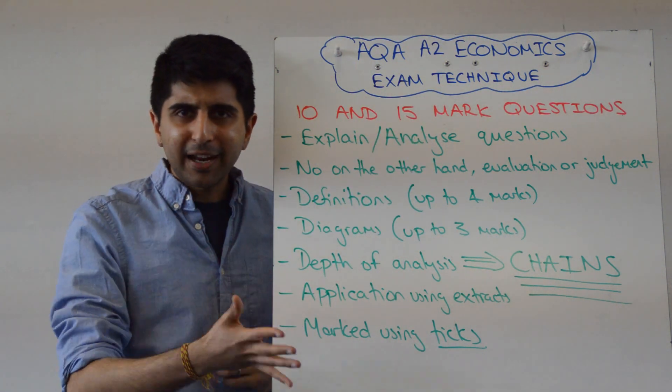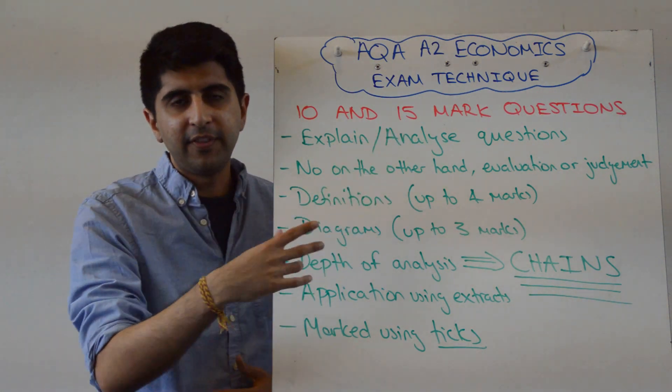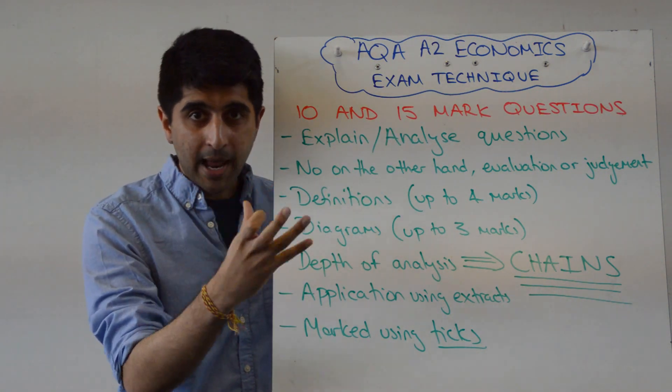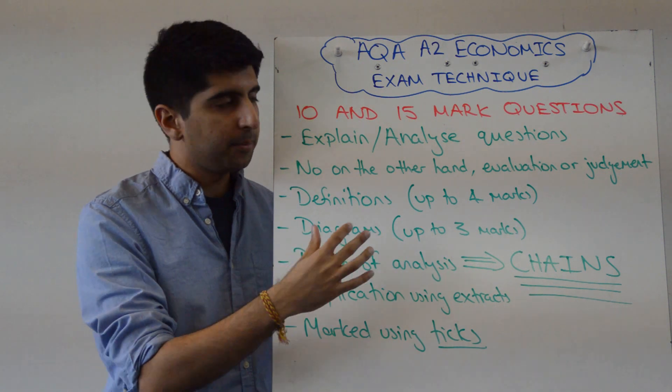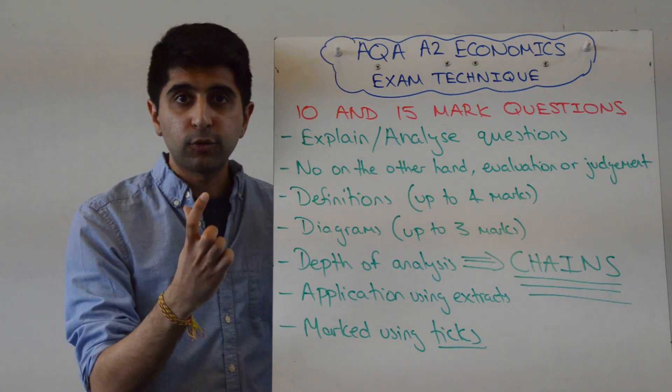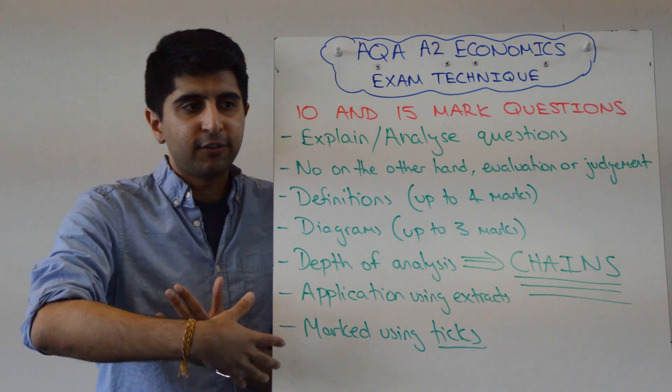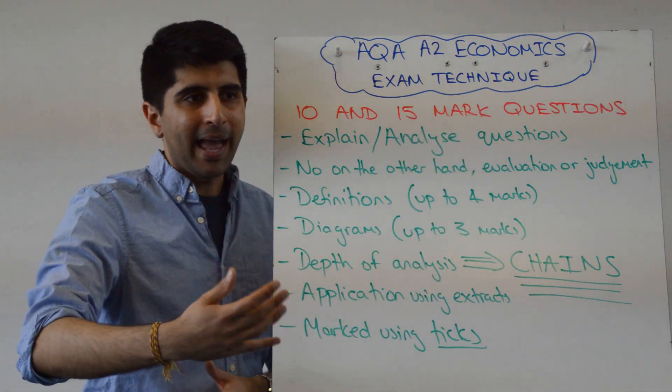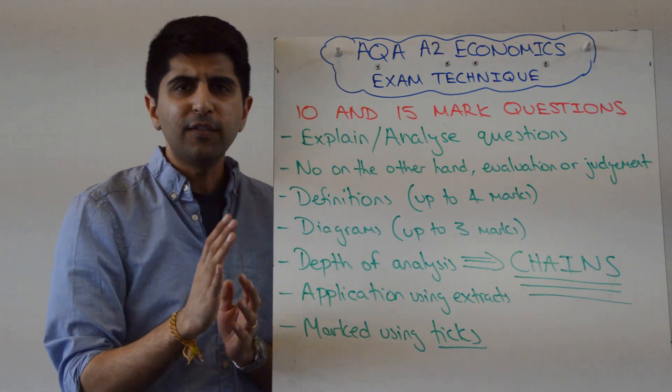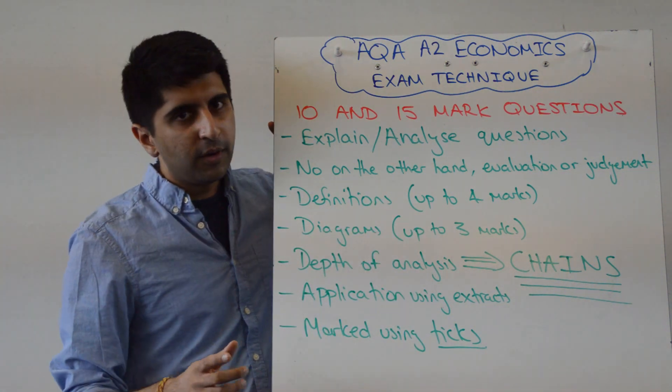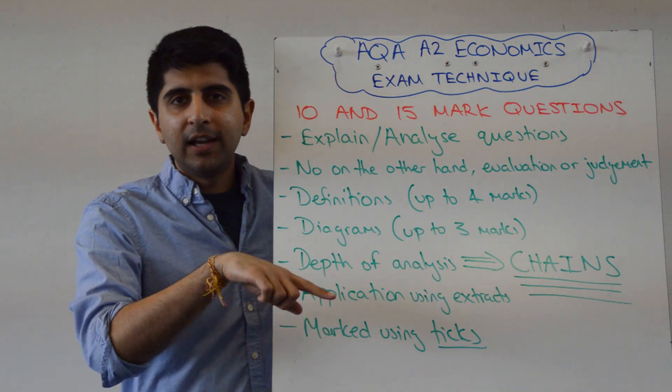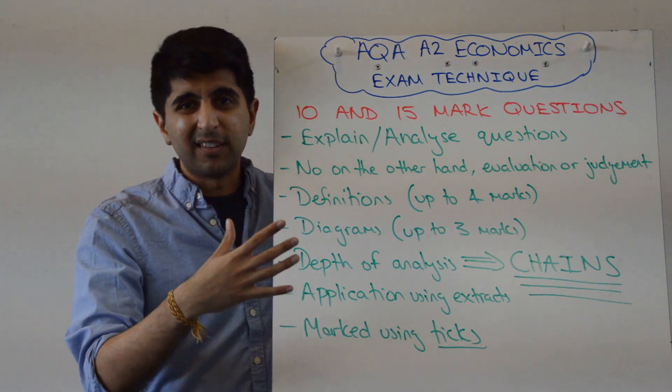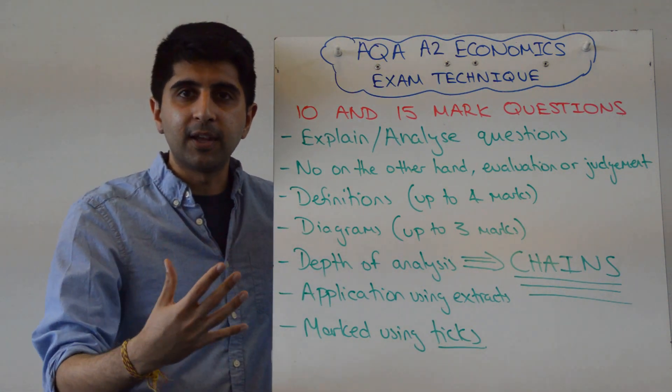These are explain/analyse questions. Doesn't matter which word they use, you're looking at depth of writing here. Depth of explanation, depth of analysis, that's what you're looking for. On the 10 marker, it will often be explain a key term and then analyse something, whereas a 15 marker will just be analyse this or explain that. So very simple. You should know from your 12 marker last year what to do on these questions. It's essentially the same kind of question, but beefed up for A2.